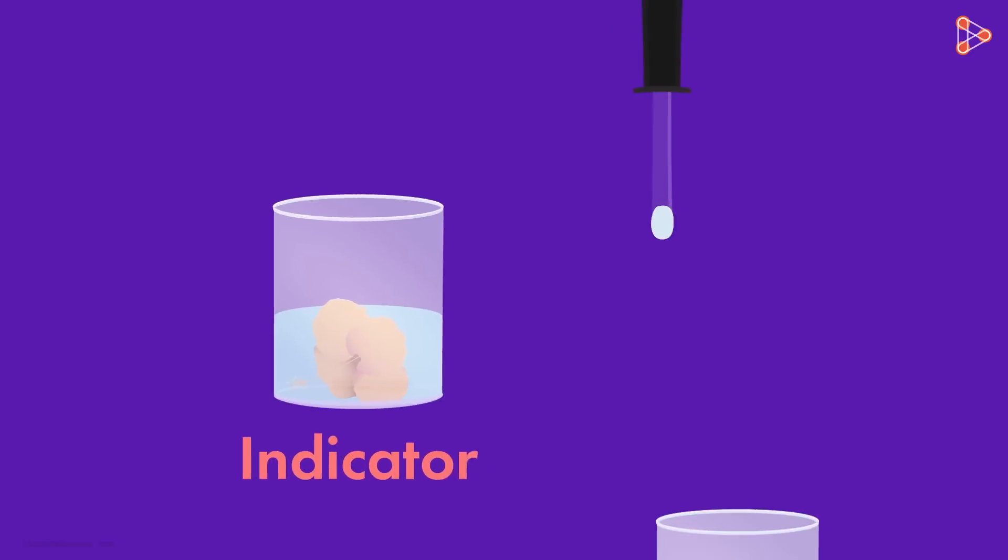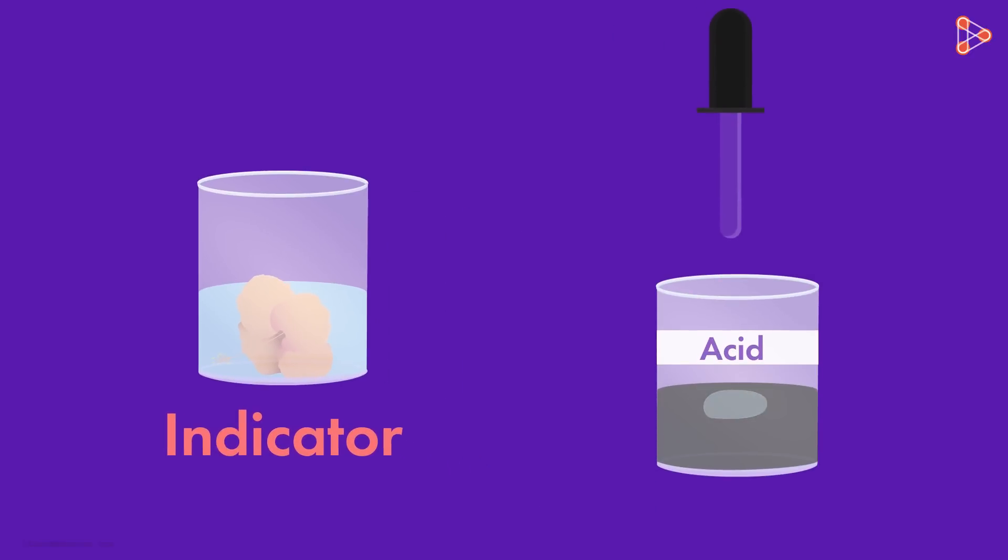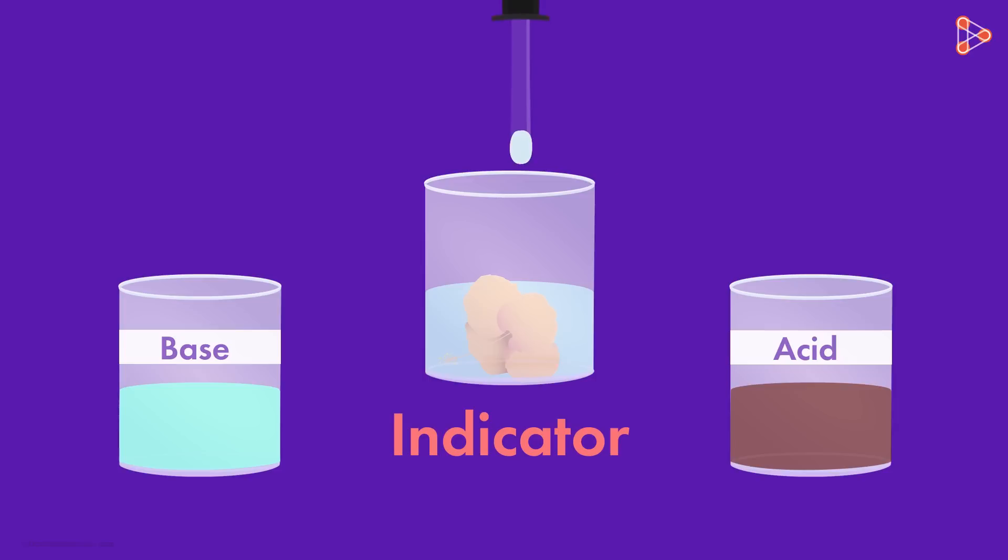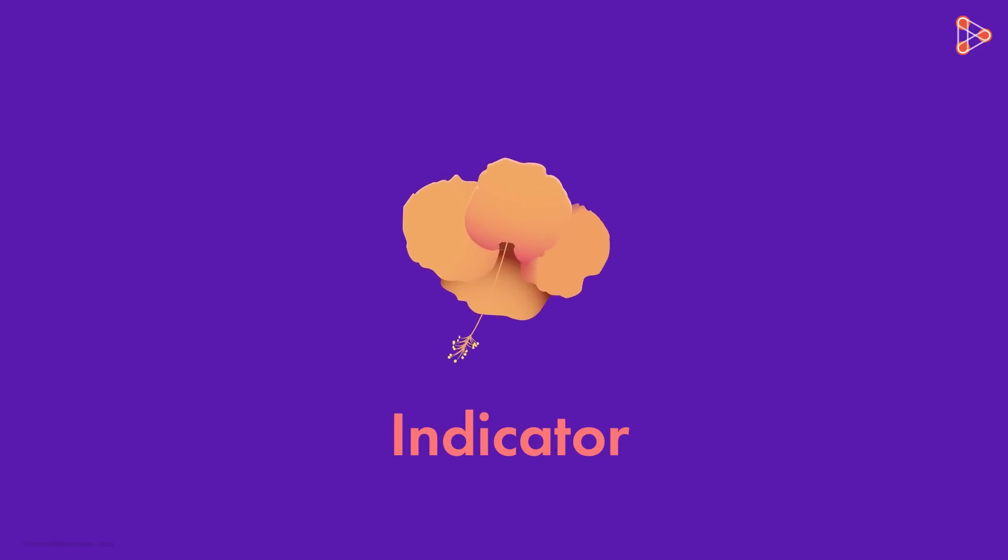When drops of this are added to an acidic solution, then the color of the solution changes to magenta red or a slightly different shade of red. However, when added to an alkaline solution, the color of the alkali changes to green or yellowish green to be precise. The solutions change color in very less time, and that is how we use China Rose as an indicator.